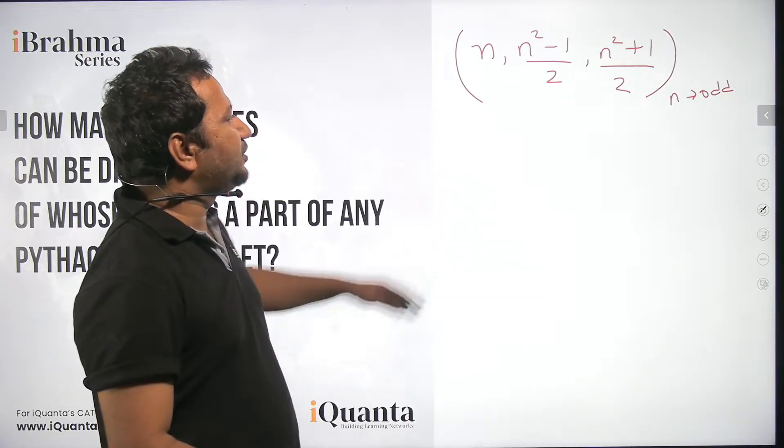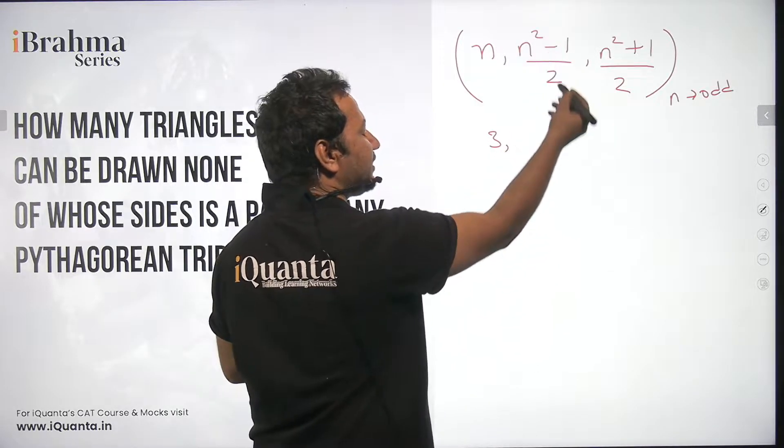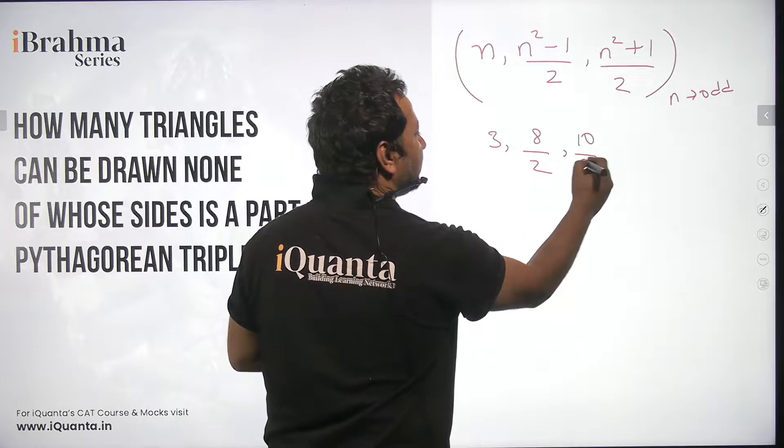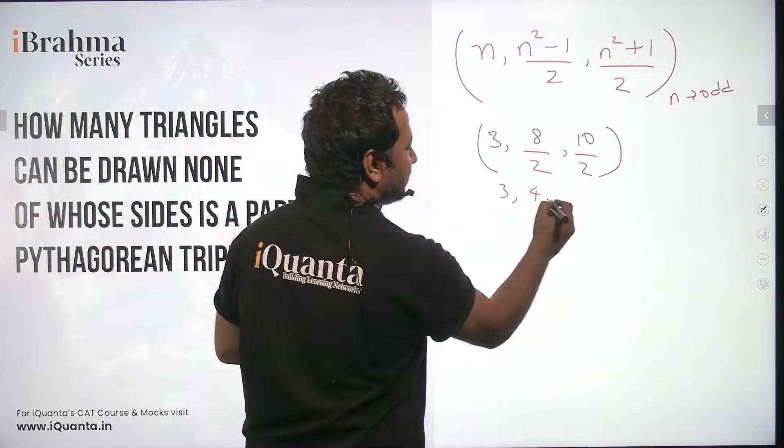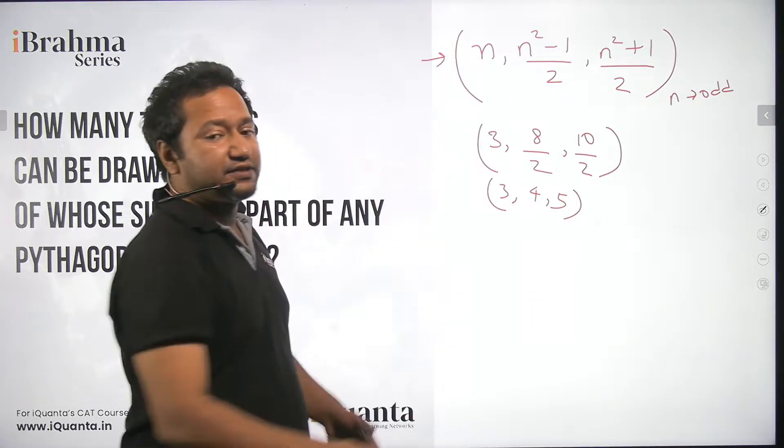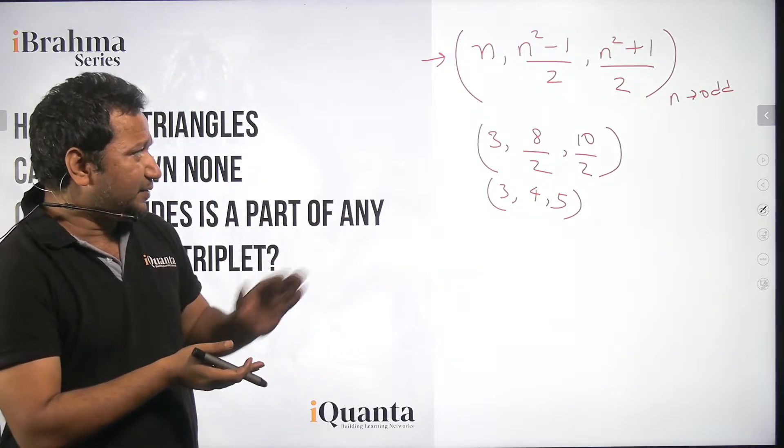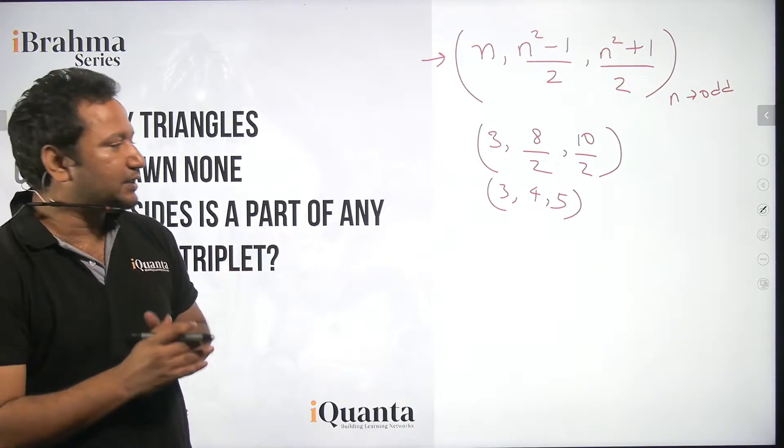For example, if you put n is equal to 3, then this becomes 3 square, 9 minus 1 is 8 upon 2 and similarly 10 upon 2. So you will get a Pythagorean triplet that is 3 comma 4 comma 5. So all in all this formula which is about Brahma triplet finding the triplet just by knowing the value of n. So this is the formula for when n is odd.